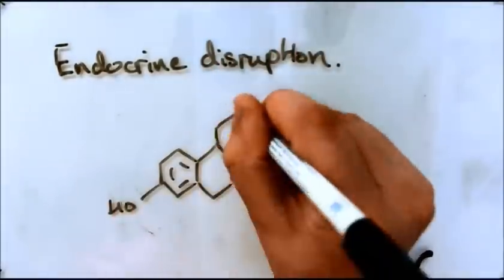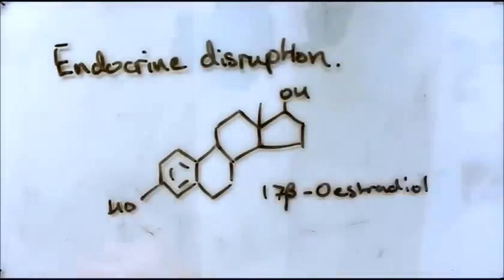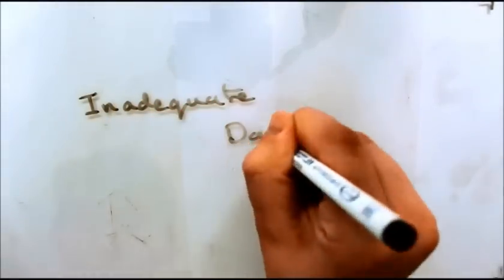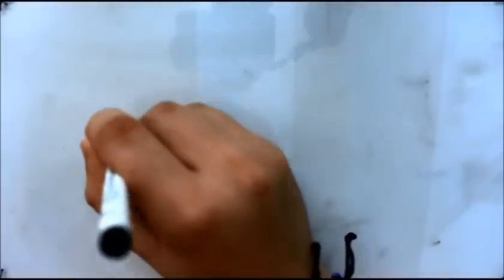One study has shown that phthalates imitate the function of some hormones in the endocrine system, blocking their function and accelerating the breakdown of some hormones. There is inadequate data from most studies to validate the reliability of such claims.